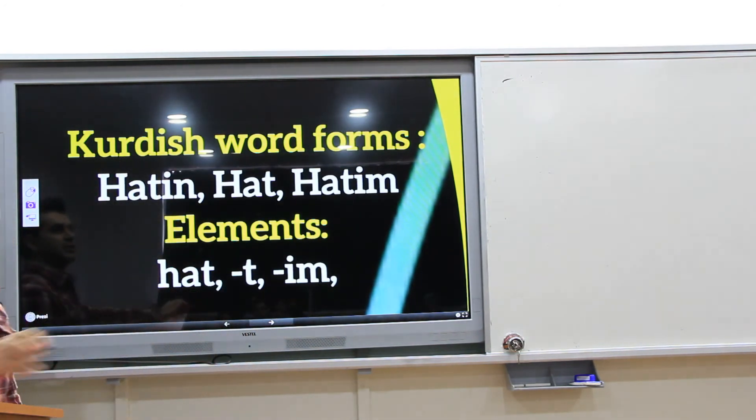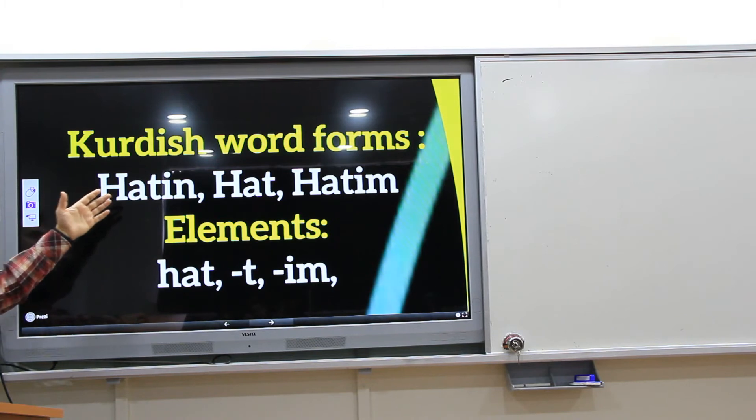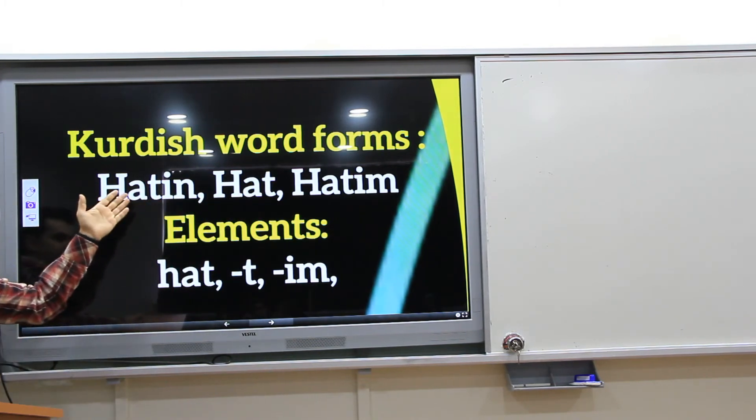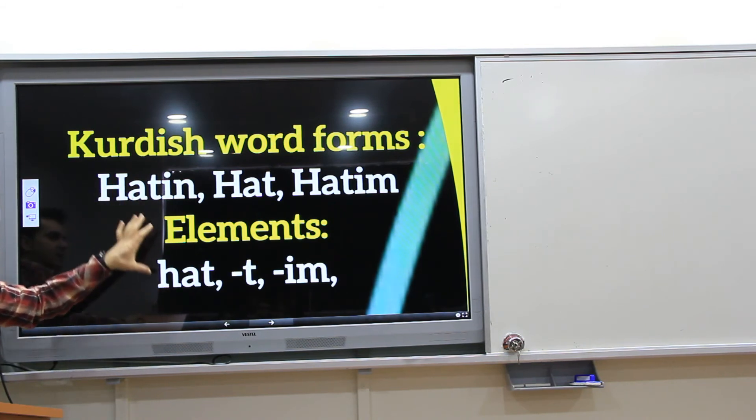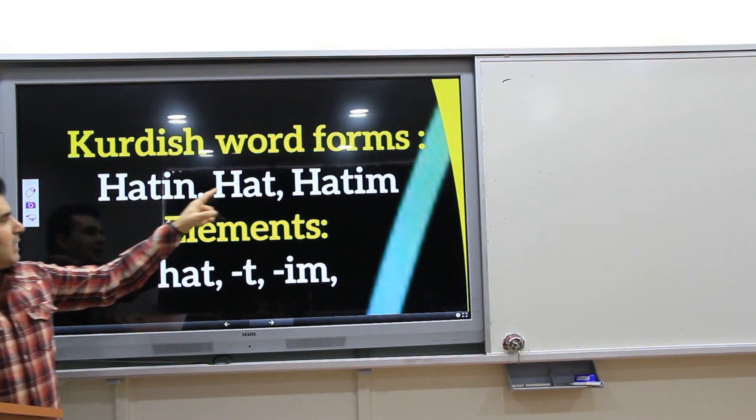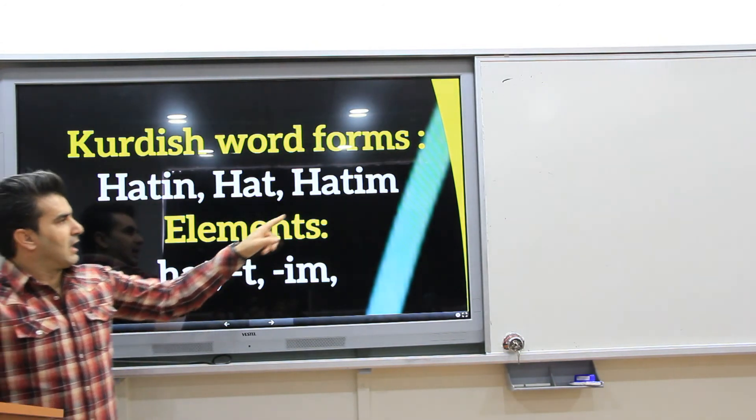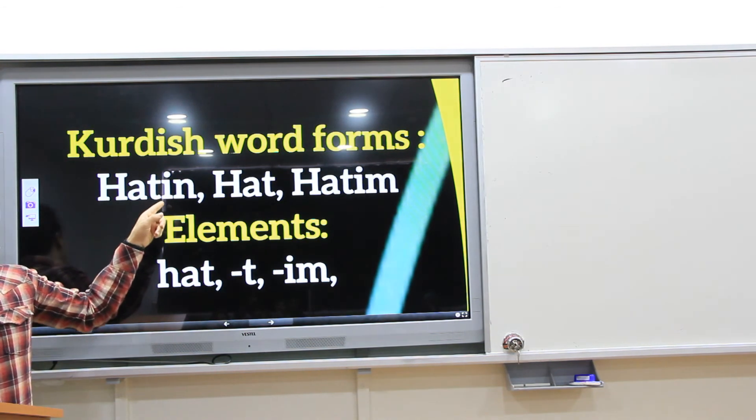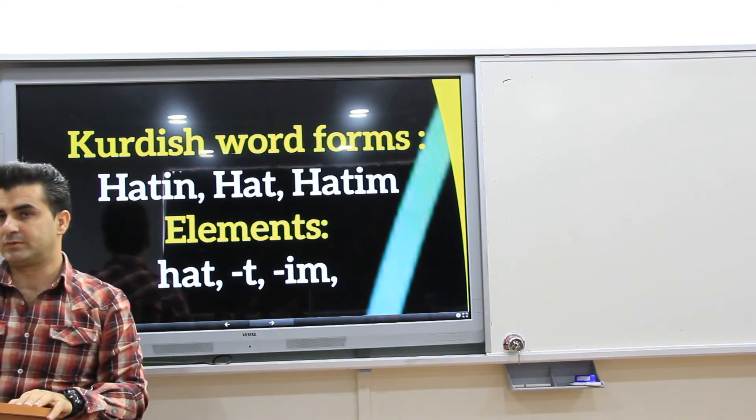In Kurdish, hatin, hat. Hat means gelmek. So, hat is one element, and there's te, another element, and im is another one, and also in is another one. You see?